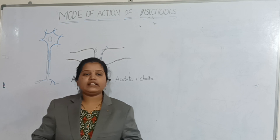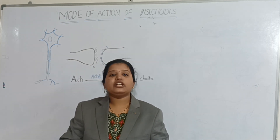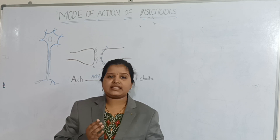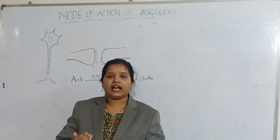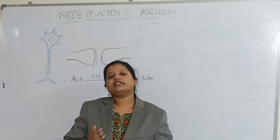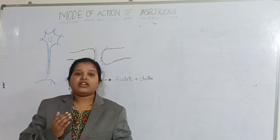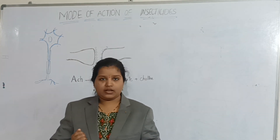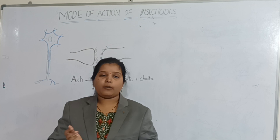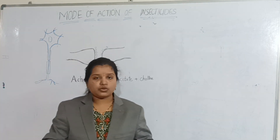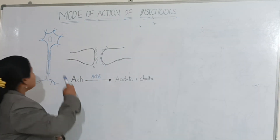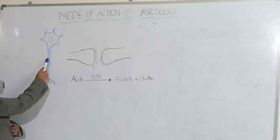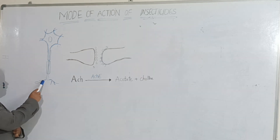Acetylcholine is a neurotransmitter or messenger which conveys the message from one neuron to the other neuron. The insect nervous system consists of several neurons connected in the form of a chain, and each neuron will have the soma or cell body, the axon, and the terminal arborations.